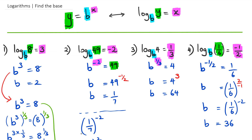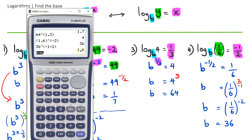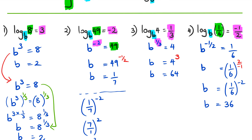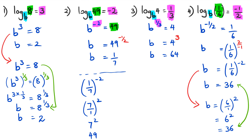Working that out: 1 over 6 as a fraction to the power of negative 2 gives us 36. Checking: 36 to the power of negative 1 over 2 in the calculator gives a recurring decimal, and clicking F to D confirms it is 1 over 6. You could also do it this way — since b equals 1 over 6 to the power of negative 2, flip the fraction to 6 over 1 and change to positive 2, giving 6 squared which is 36. Same answer.